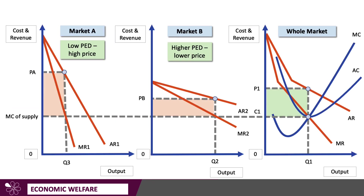This is the third-degree price discrimination diagram — the full version. Most people in the exam only draw the first two: the left and the middle one. If you want me to walk through that with you, just search on YouTube for third-degree price discrimination. The key point here is that in market A, where there's a low price-elasticity of demand, the price is high and the firm is able to extract a lot of consumer surplus. In market B, where consumers are more price-sensitive, the price is lower — they can still make a profit and there is still some consumer surplus there. But if they charged price PA for that group, nobody would buy the product at all. So if you get a question on price discrimination, good analysis might involve talking about the impact on consumer surplus.